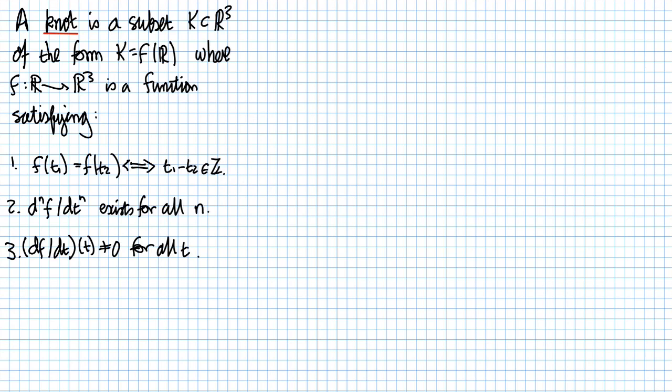What is a knot? Well here, taken directly from the notes, is the definition of a knot. A knot is a subset K inside R³ of the form K equals F of R, where F from R to R³ is a function satisfying the following three conditions.